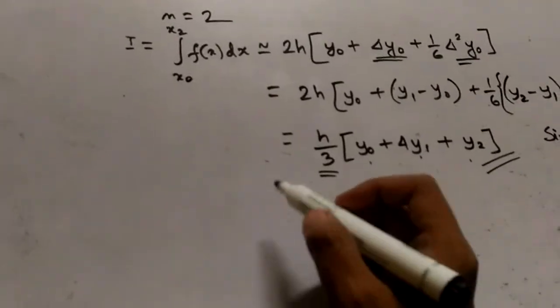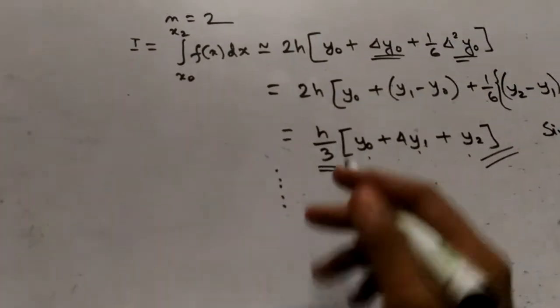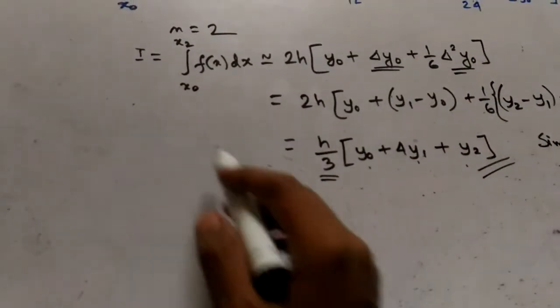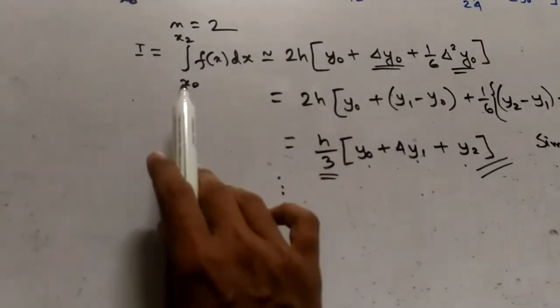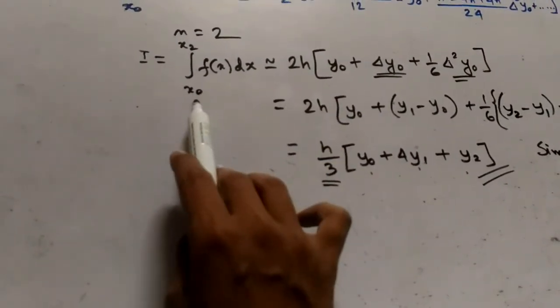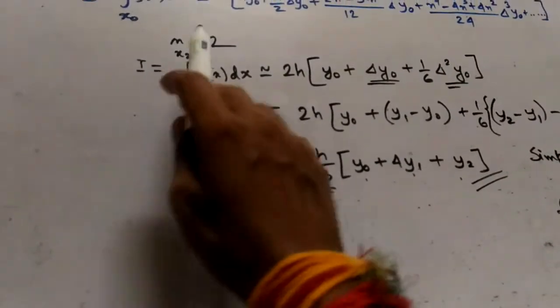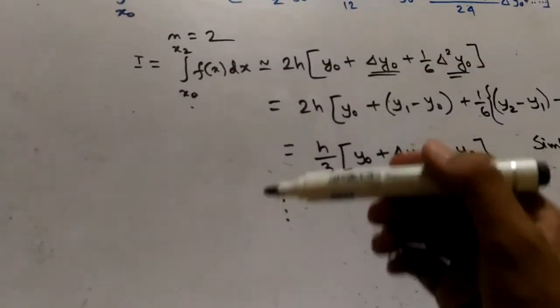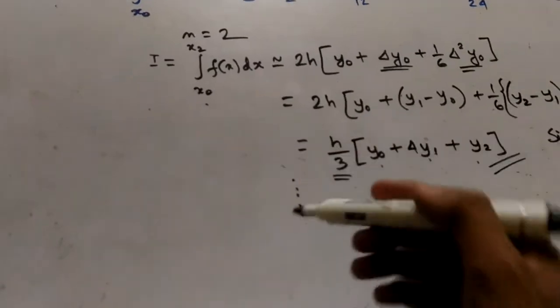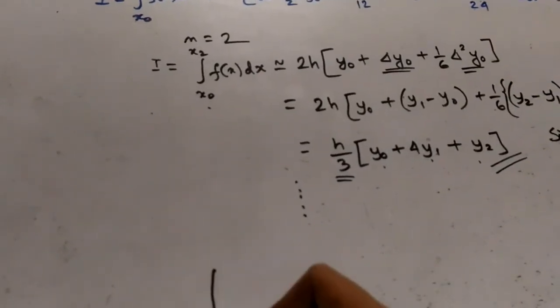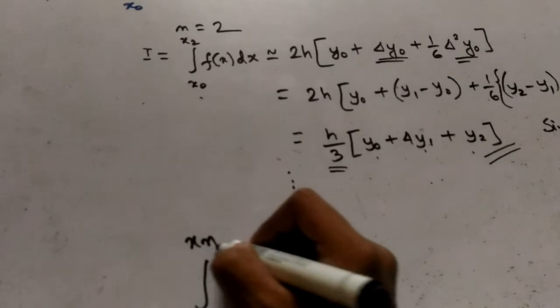Now in similar ways, I will get more values for y. Like here I have got x0 to x2, then I will get x1 to x3, then x2 to x4, and so on up to xn-1 to xn.